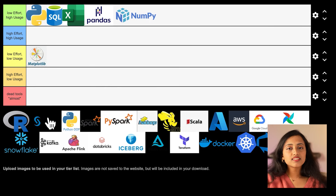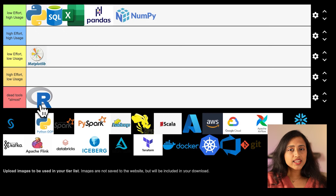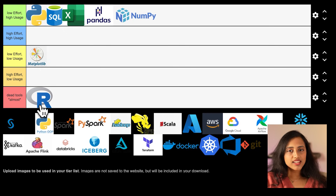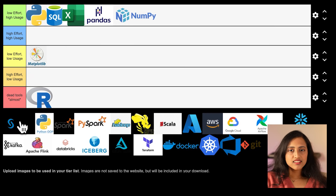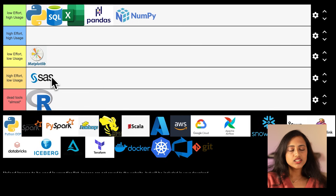There are other tools that existed before Python rose to prominence — R and SAS. R is almost as good as dead right now, because whatever applications were previously running with R, there is mostly migration happening in the industry to move those applications to Python. Learning R in 2025 is not the most efficient use of time. Similarly, SAS is another statistical analysis tool used before by data scientists. Although it is still widely used, Python is a much better option to start with as of 2025, so I'm putting SAS in high effort and low usage.